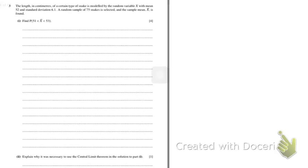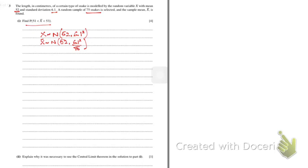Question 3: The length in centimeters of a certain type of snake is modeled by a random variable X with mean 52 and standard deviation 6.1. A random sample of 75 snakes is selected. Since X follows a normal distribution, X-bar will also follow a normal distribution. Similarly, if X follows a binomial, X-bar follows a binomial; if X follows a Poisson, X-bar follows a Poisson.